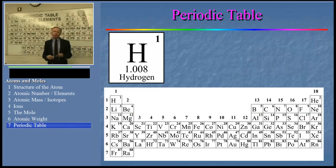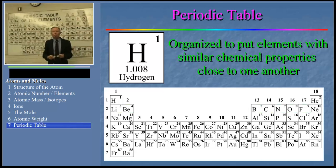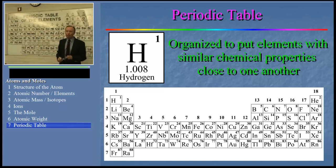Now, the elements are organized in this fashion because it puts elements with similar chemical properties close to one another. And this is very handy for the chemists. Chemists use the periodic table a lot. And in fact, you'll be using the periodic table a lot in this class.